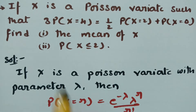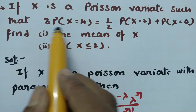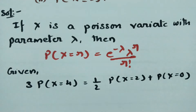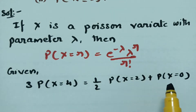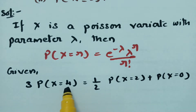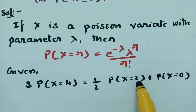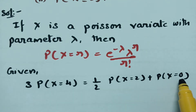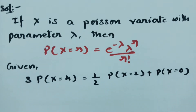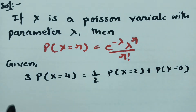What is given in the question? 3 times the probability of x equals 0 is equal to half times the probability of x equals 2 plus probability of x equals 0. Here r equals 0, here r equals 2, and here r equals 0. If I substitute the same into the Poisson distribution formula, see what happens.